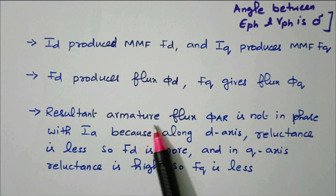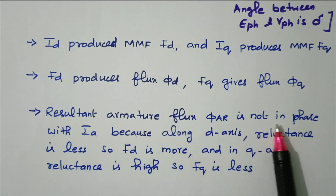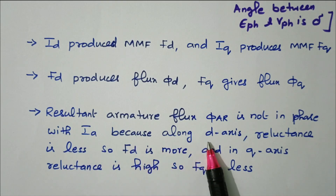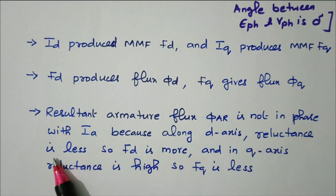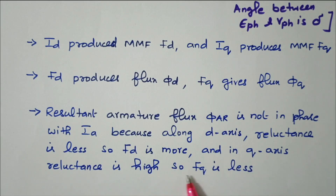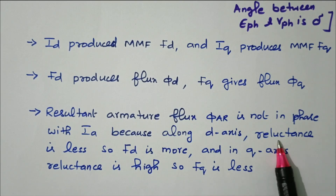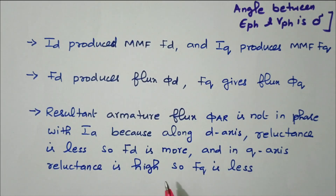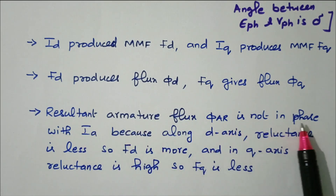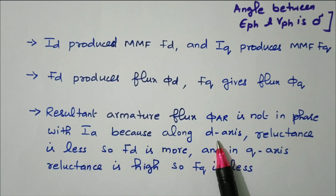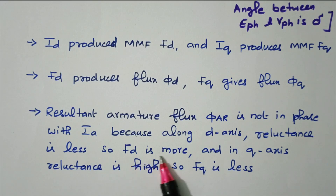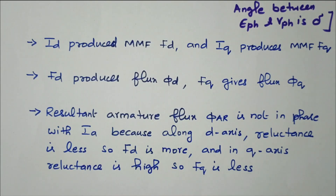The resultant armature flux φar is not in phase with Ia, because along the D-axis the reluctance is less, so Fd is more; and in the Q-axis the reluctance is high, so Fq is less. There is low reluctance in the D-axis and high reluctance in the Q-axis. Therefore, the resultant armature flux φar is not in phase with Ia.